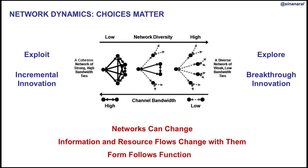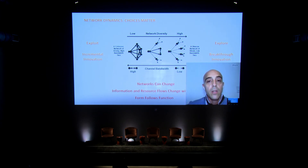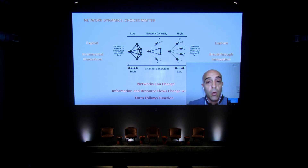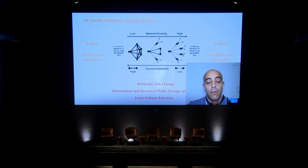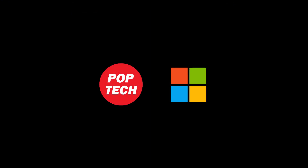My point is that form follows function. If you are trying to set up a network for a particular purpose, it's important to consider how the structure of that network will help you achieve different types of goals — exploiting versus exploring, incremental versus breakthrough innovation. There is no one correct network; you have to match the form to the function to succeed. Thank you very much — I look forward to the discussion and Q&A.